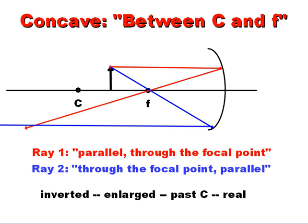Now you're noticing here that we're going to get our image way to the left here, somewhere past C is what the position is. It is inverted, upside down. It is enlarged. I think it's a little higher in terms of its height. It's a little bigger than the original was, and it's a real image as well.